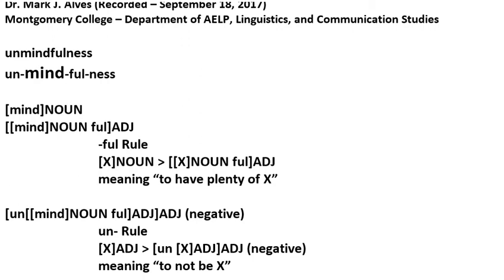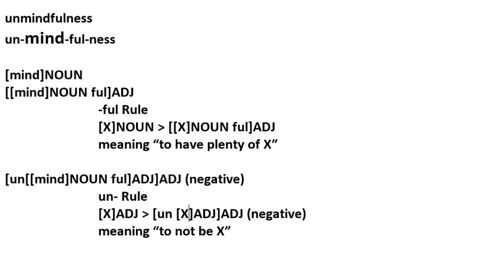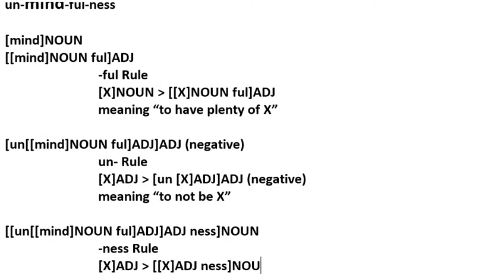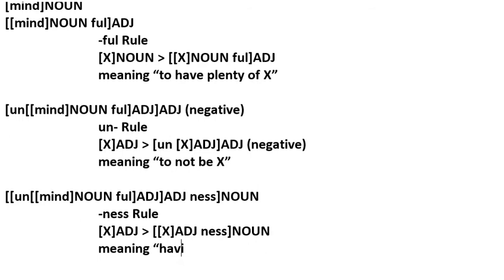In our last stage of derivation, we take our negative adjective and add the '-ness' suffix, which derives a noun. Let's call this the 'ness rule': you take an adjective X as input, add '-ness,' and that derives a noun — for example, 'mindfulness,' 'usefulness,' and any other '-ness' words we know. The meaning is 'having the traits of X.'